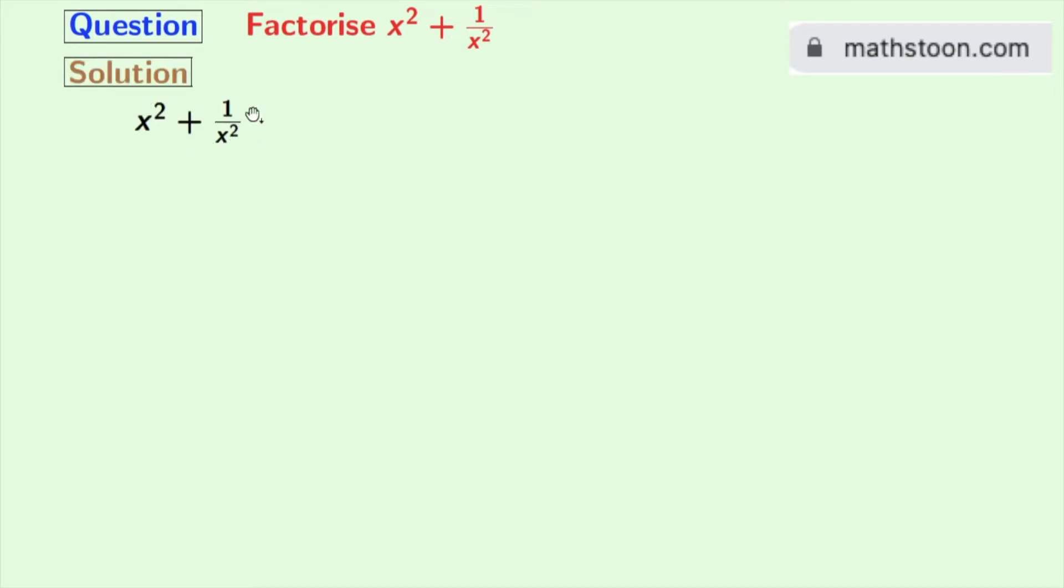This is our given expression. Now we will rewrite this as x-square plus 1 by x-square plus 2 minus 2. Here look that we have added 2 and subtracted 2. So we have done nothing extra here.